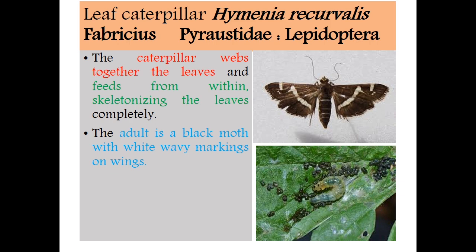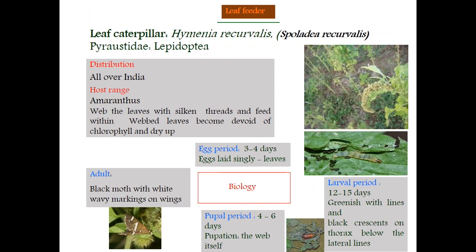Coming to biology of the leaf caterpillar: Hymenia recurvalis is otherwise called Spoladea recurvalis — see the genus name in the slide. Egg period is 3 to 4 days, eggs are laid singly on leaves. Larval period is 12 to 15 days; the larva is greenish with lines and a black crescent on the thorax below the lateral lines. Pupal period is 4 to 6 days; pupation takes place within the webbed portion of leaves. Adult is a black moth with white wavy markings on wings.